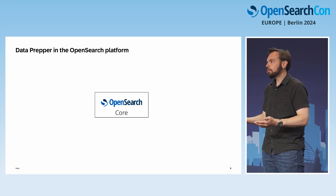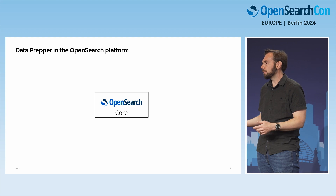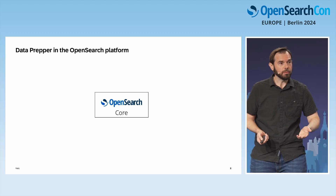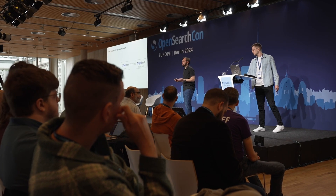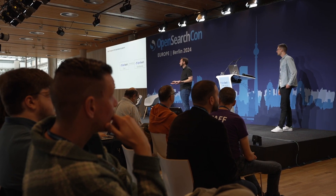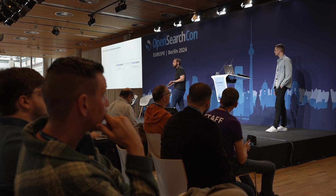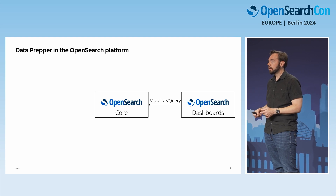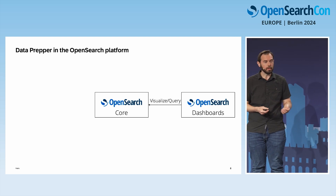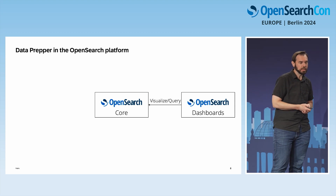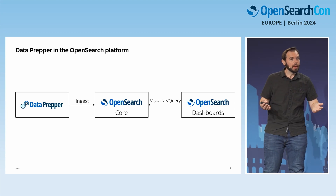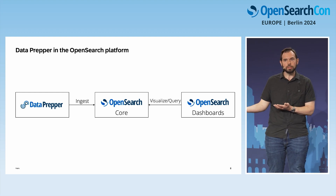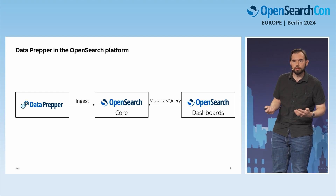We have OpenSearch Core — the set of REST APIs that provide distributed Lucene. Then we have OpenSearch Dashboards, a tool to visualize and query data. For observability use cases such as trace and logging, there's a fantastic observability plugin that some colleagues maintain. DataPrepper sits on the ingestion side — you use it to get your data into OpenSearch Core so that you can query it.